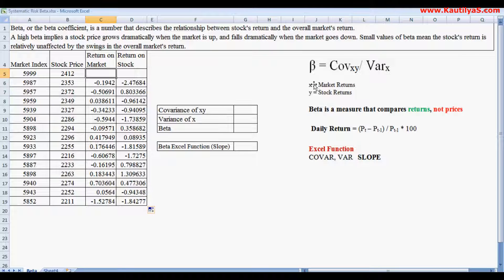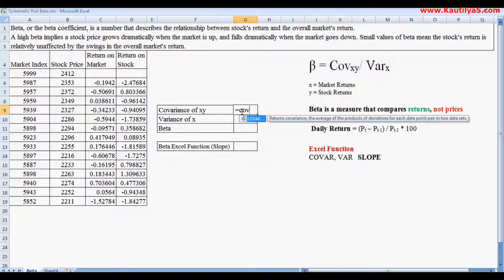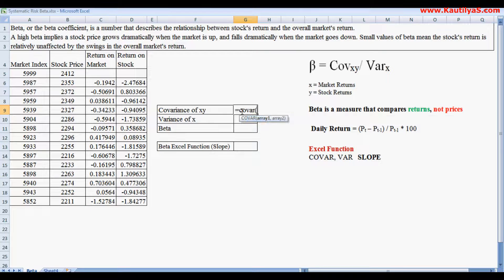For covariance of XY we use built-in function COVAR. Here we calculate covariance of XY equals COVAR, pick array 1, comma, pick array 2. We got the covariance of XY.